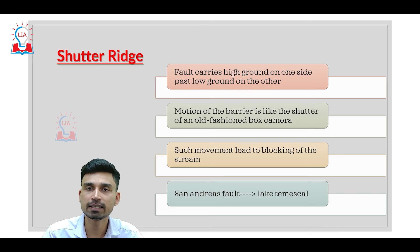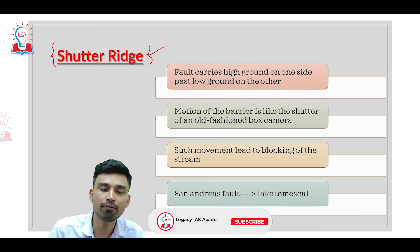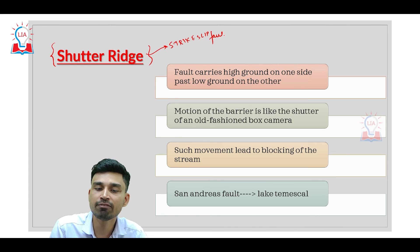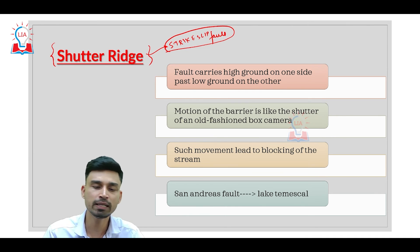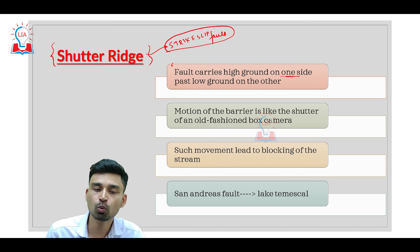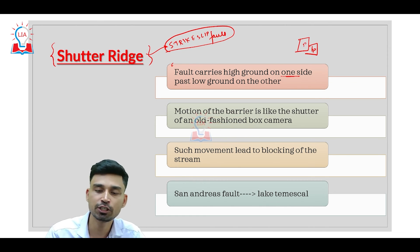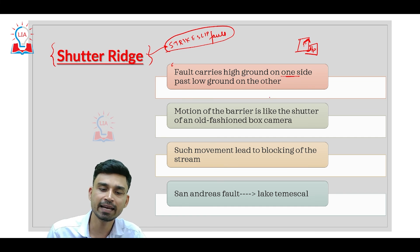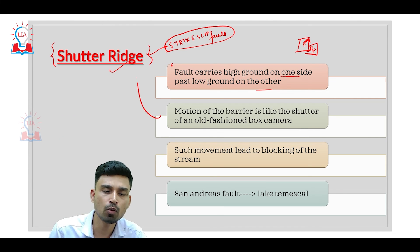The last tectonic landform is the shutter ridge. A shutter ridge also develops in areas with transform plate interaction or where a strike-slip fault develops. A strike-slip fault develops where two plates move along a common boundary, neither toward each other nor away. In this case, the fault carries high ground on one side past low ground on the other. If plate one has highlands such as ridges or hills, and plate two has valleys, when the hills of plate one move against the valleys of plate two, a landform called a shutter ridge develops. The motion of the barrier is like the shutter of an old-fashioned camera, which is how the name was derived.